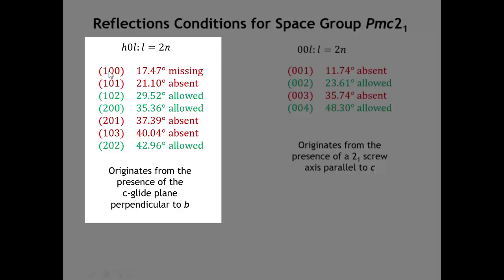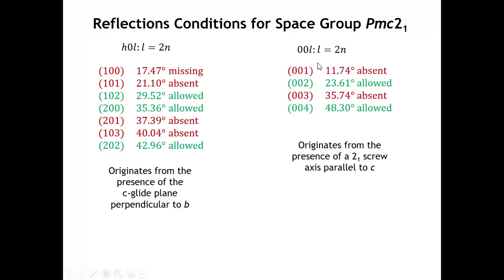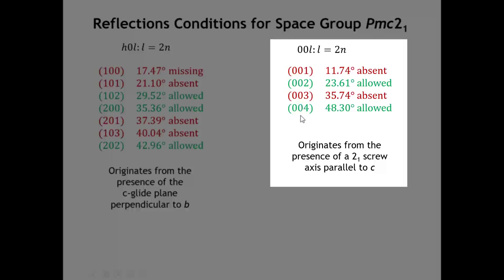We can also see that the 100 peak, which is allowed because L is zero — an even number — is missing. That points out that sometimes the details of the crystal structure are such that some peaks are so weak that we won't see them. The 100 peak is not forbidden in this space group, but in this particular crystal structure it's so weak that we don't see it in the powder diffraction pattern. For the 00L reflections, we scanned out to a high enough angle where we would have seen the 001 and 003, but they're missing.